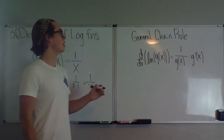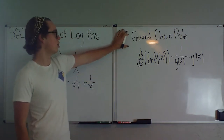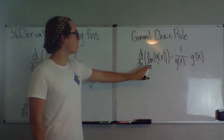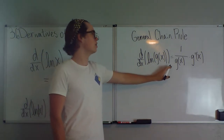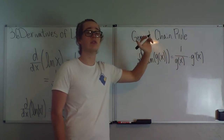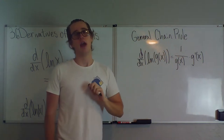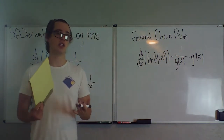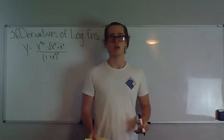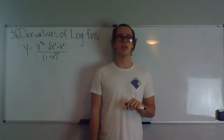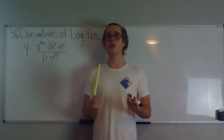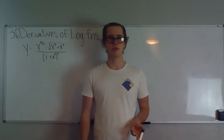Another great property is the general chain rule: d/dx of ln(g(x)) equals 1 over g(x) times g prime of x, assuming g(x) is differentiable. From this we get something very nice called logarithmic differentiation.